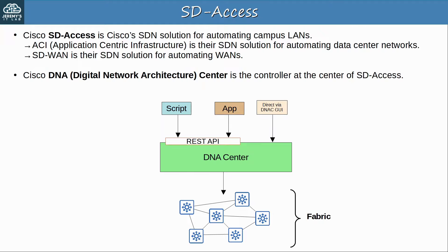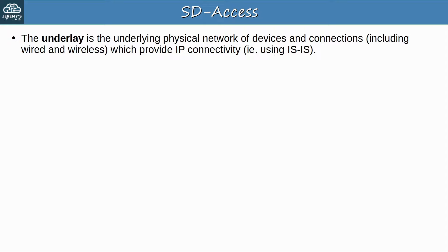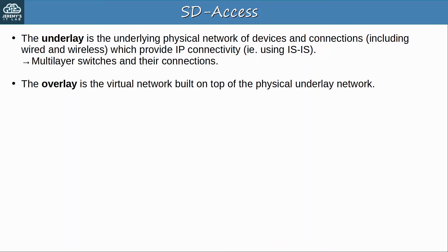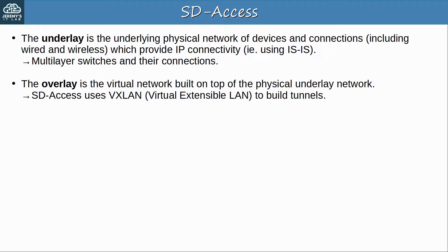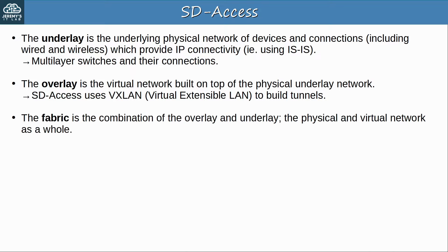Now let's look at the term fabric. To understand the fabric, you need to understand two other terms. First, the underlay is the underlying physical network of devices and connections — wired and wireless — which provide IP connectivity, for example with a routing protocol like IS-IS. Then the overlay is the virtual network built on top of the physical underlay network. For example, SD Access uses a protocol called VXLAN, virtual extensible LAN, to build tunnels. And fabric is the term we use to refer to the combination of the overlay and underlay — the physical and virtual network as a whole.